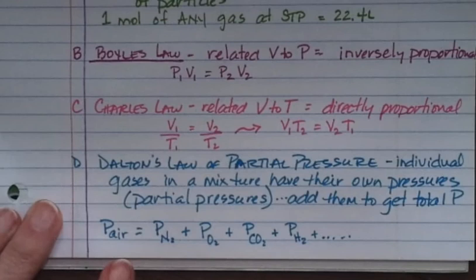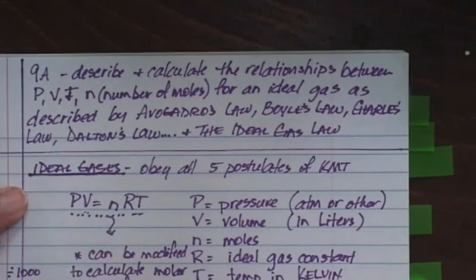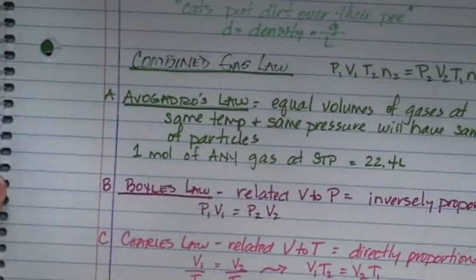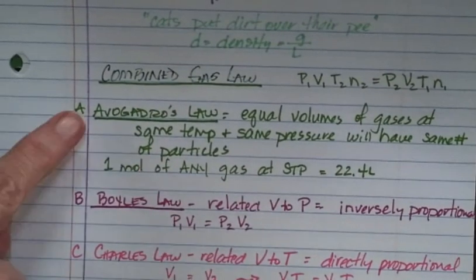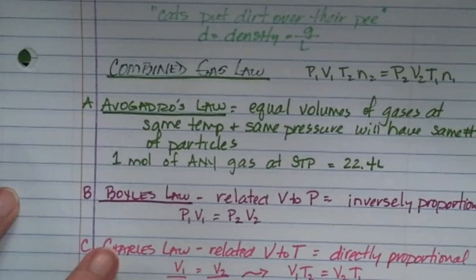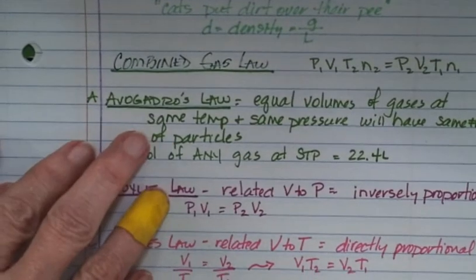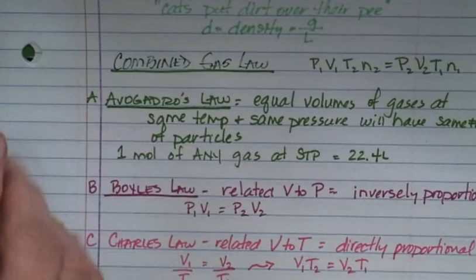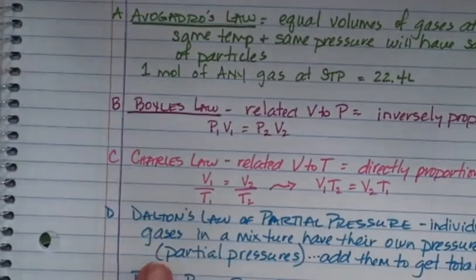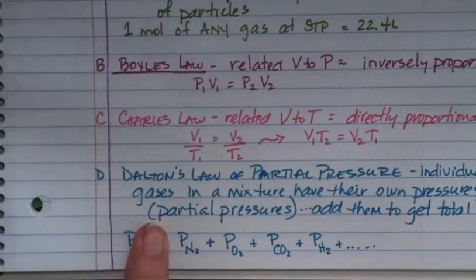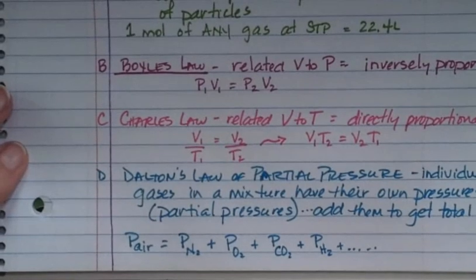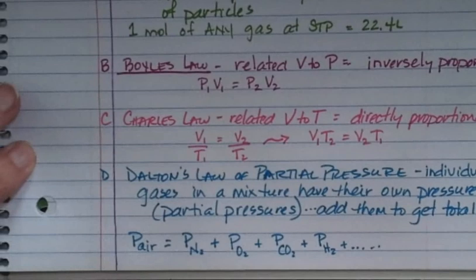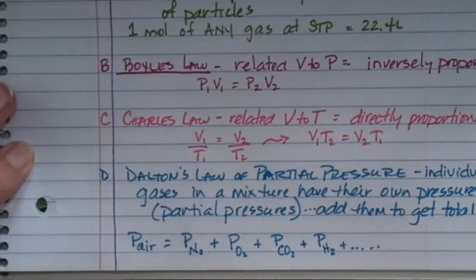So far we've talked about the ideal gas law — PV equals nRT — and we started talking about the combined gas law, which we get from Avogadro, Boyle, and Charles. Those three guys dealt with pressure, volume, and temperature. Then we also have Dalton's law of partial pressure, which says if you have a mixture of gases, each one has its own pressure and you can find the partial pressure of any individual gas in that mixture.